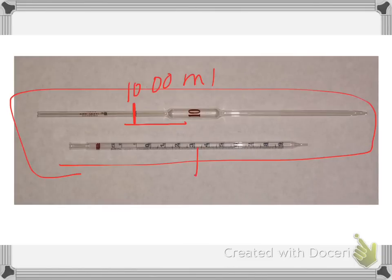This top one has only one line on it and the line is a 10.00 milliliter line. Now, this pipette has a bunch of gradations, so I can use it when I'm measuring out 1, 2, 3, 4, up to 10 milliliters.